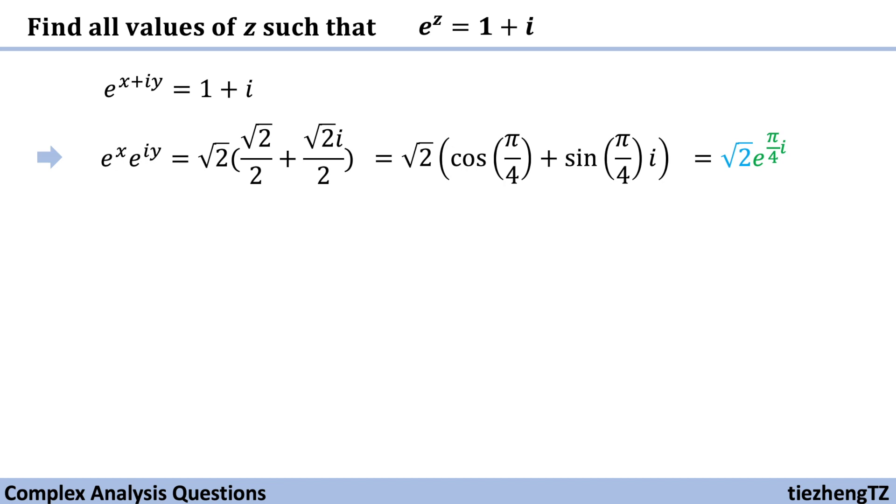All right, so we have the new form and we know the real part is e to the power of x, which is square root 2. So we can solve x, which is ln square root 2. And ln square root 2 is also equal to ln 2 to the power of 1 half. We can move the 1 half out of the ln form. So x is equal to 1 over 2 times ln 2.